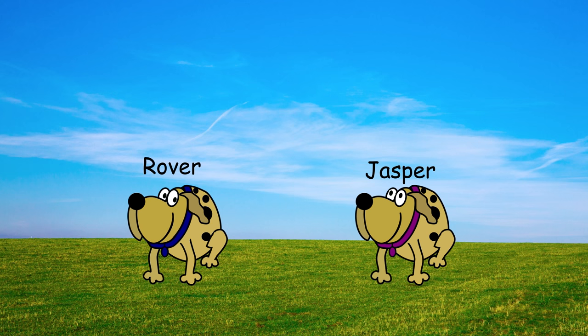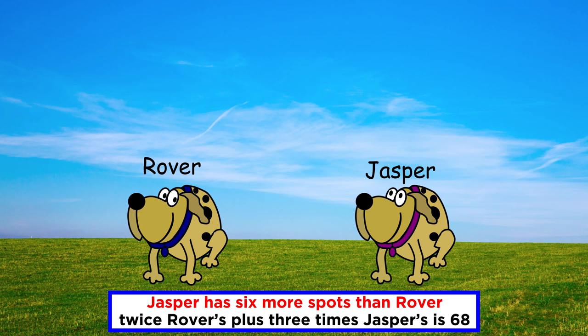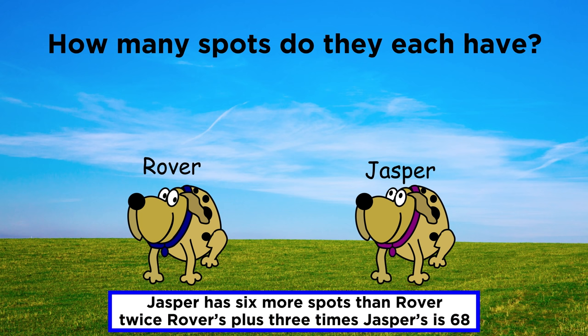Let's try one more. Rover and Jasper are dogs, and they each have spots. Jasper has six more spots than Rover does, and twice the number of Rover's spots, plus three times the number of Jasper's spots equals sixty-eight. How many spots do they have?